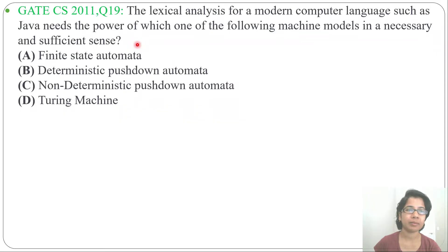Hi, let's solve the next previous question of compiler. This question was asked in GATE CS 2011, question number 19. The lexical analysis for a modern computer language such as Java needs the power of which one of the following machine models in a necessary and sufficient sense?